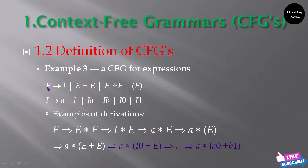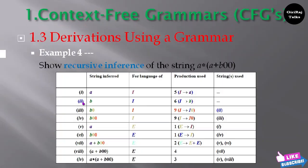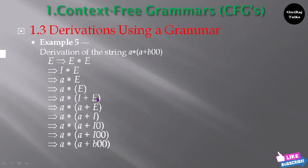In place of E you write E star E, and in place of i you can write a, b, i, a like that — following these substitutions you will get the desired string. So if you follow all of those productions, you will finally get a star of a plus b zero zero, which is the required string.